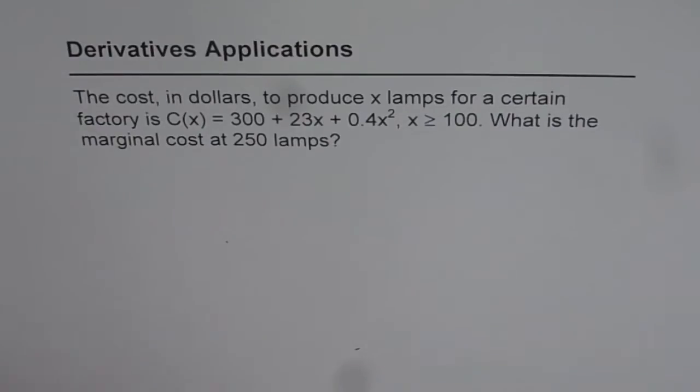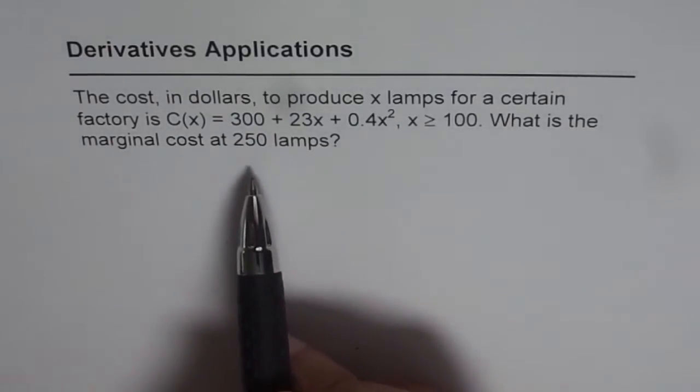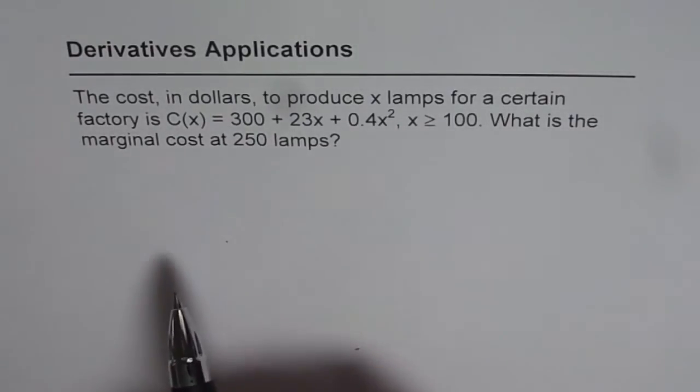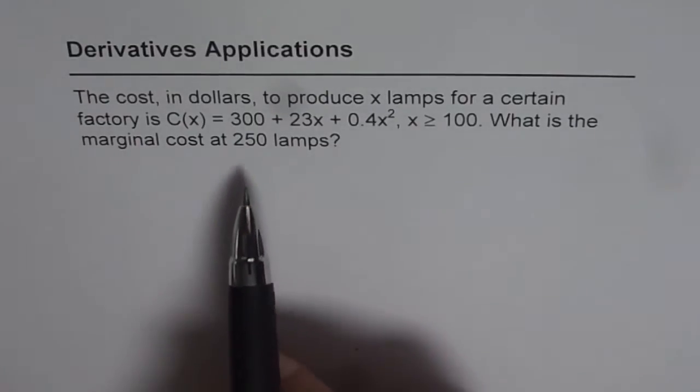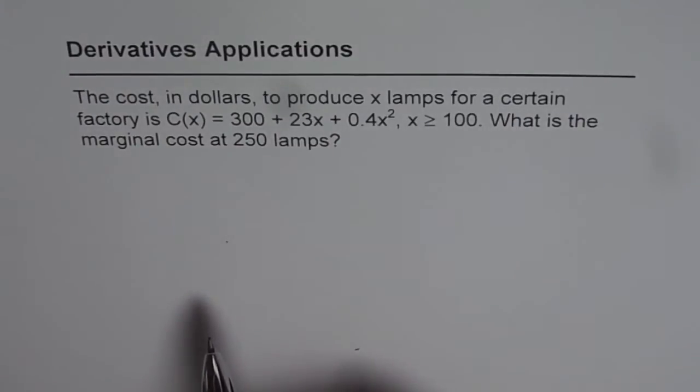Now let us first understand what is marginal cost. Marginal cost is actually the change in cost at this stage. That means if you are producing 250 lamps and produce one more, how much will that cost? That is the marginal cost.